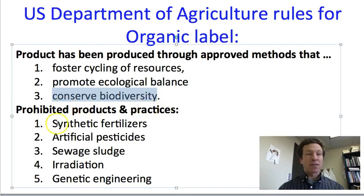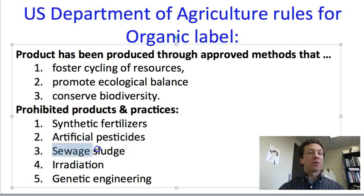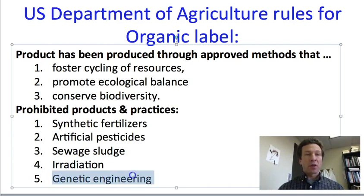The prohibited products and practices are as follows: growers cannot use synthetic fertilizers; they cannot use artificial pesticides, although they can use approved natural pesticides; they cannot use sewage sludge, which is high in nutrients but carries a risk of containing heavy metals and other chemical contaminants; they cannot use irradiation; and they cannot use genetically engineered plants, partly because of a general philosophy and partly because of a perception that these are riskier for health — whether they are or not is again a matter of debate.